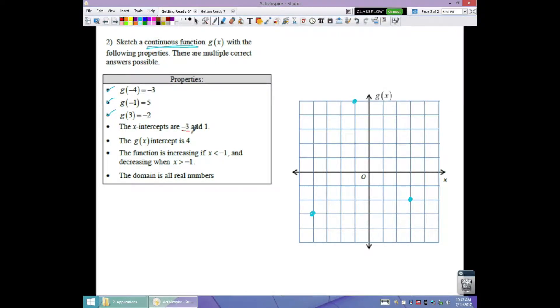The x-intercepts are negative three and one. So x-intercepts where they hit the x-axis at negative three and at one. The g of x-intercept is four. One, two, three, four. So done and done. The function is increasing when x is less than one. So that is everything to the left of that dotted line. And it's decreasing after negative one. So I have to be going up on this side and down on the right side.